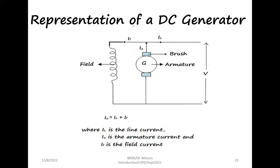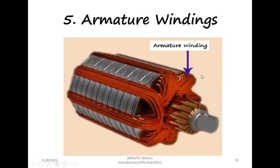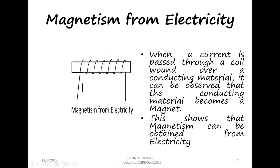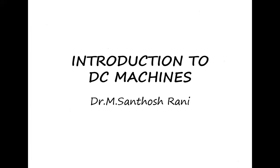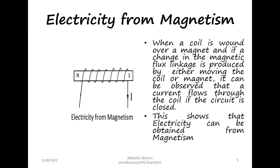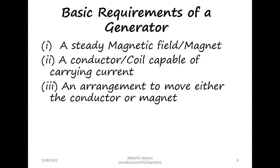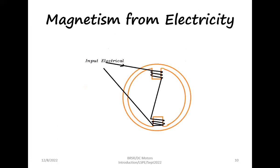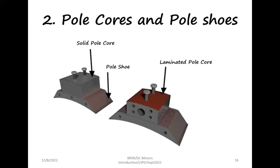So in this lecture we have seen about the basic principle of a DC machine, the generator principle, the motor principle, and the representation of a DC motor and generator. Hope this clarifies the basics of the DC machine. Thank you.